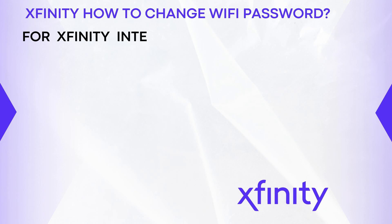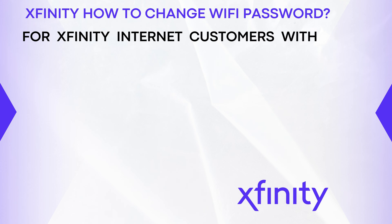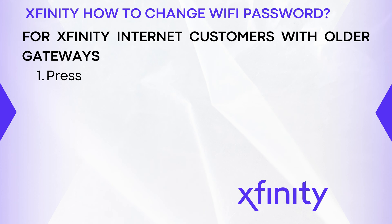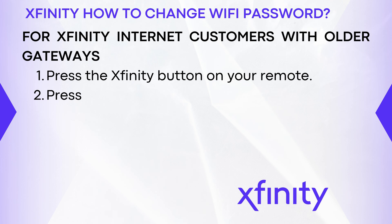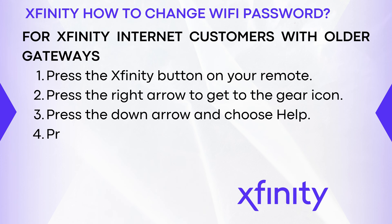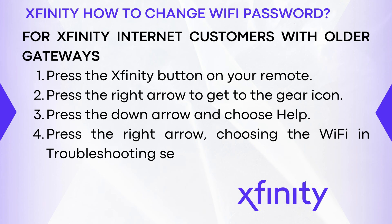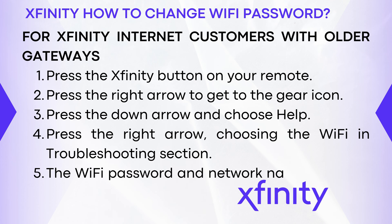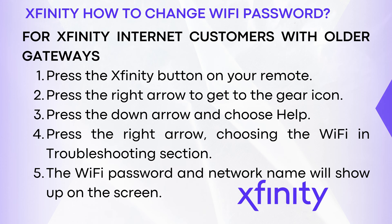For Xfinity Internet customers with older gateways, press the Xfinity button on your remote. Press the right arrow to get to the gear icon. Press the down arrow and choose Help. Press the right arrow, choosing the Wi-Fi and troubleshooting section. The Wi-Fi password and network name will show up on the screen.